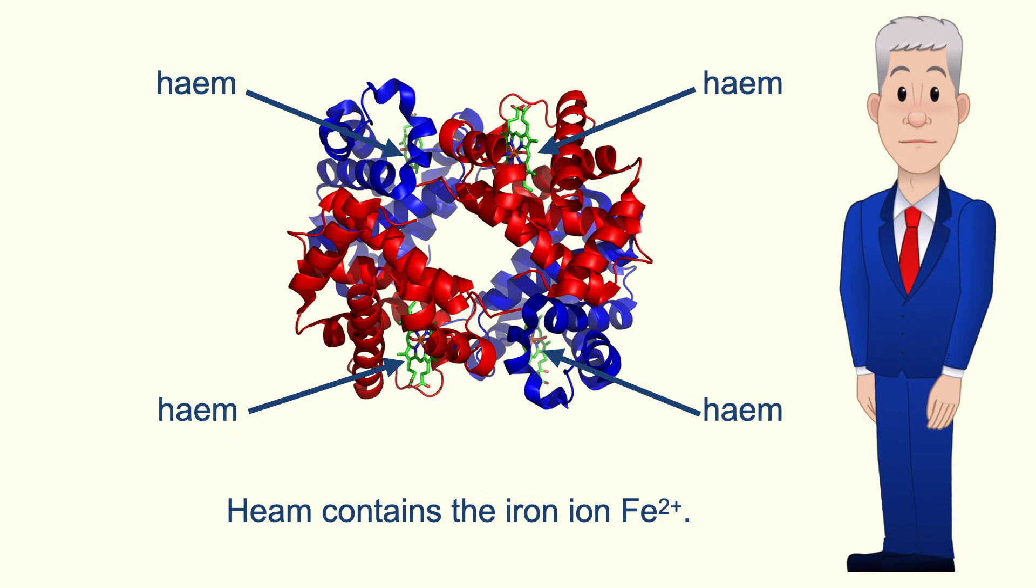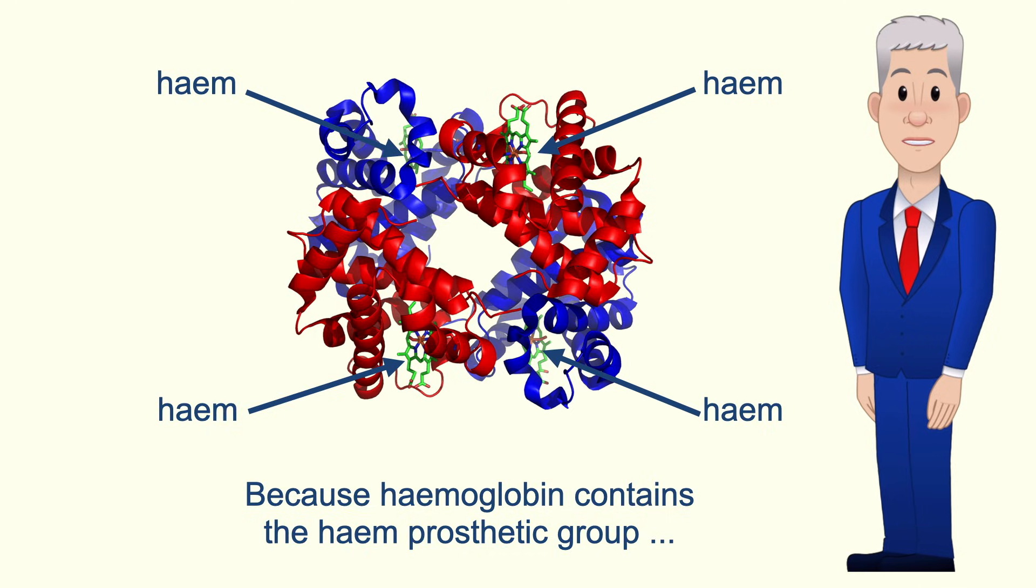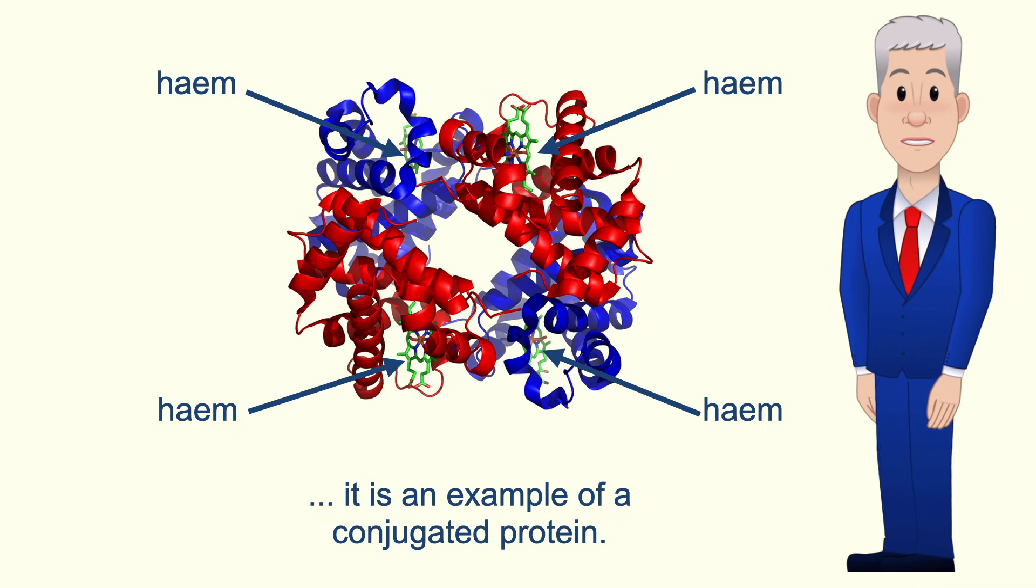Haem contains the iron ion Fe2+. Now because haemoglobin contains the haem prosthetic group, it's an example of a conjugated protein.